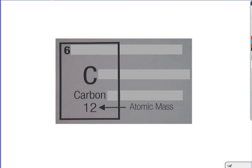Down below, this is the atomic mass, sometimes also called the average atomic mass. In our book, the atomic mass has been rounded to the nearest whole number, 12, for carbon.